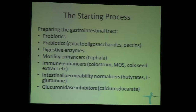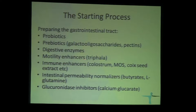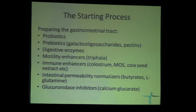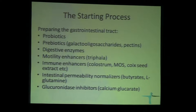Ideally, you need to prepare the gastrointestinal tract before you start antimicrobial therapy. There is room for probiotics, prebiotics, enzymes, motility enhancers, and immune enhancers such as colostrum and mannan oligosaccharide. We heavily use intestinal permeability normalizers, mainly butyrates. Sometimes you also need glucuronidase inhibitors to prevent recycling of microbial toxins — a typical one is calcium glucarate, but you can also use glucuronolactone.